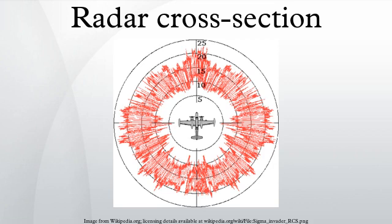Radar cross-section is a measure of how detectable an object is with radar. A larger RCS indicates that an object is more easily detected. An object reflects a limited amount of radar energy.